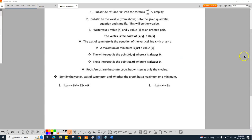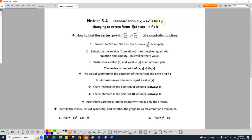Okay, Algebra 2. Today we're going to learn how to go from standard form, which is ax squared plus bx plus c, into the vertex form, which is what we've been learning, ax minus h squared plus k.